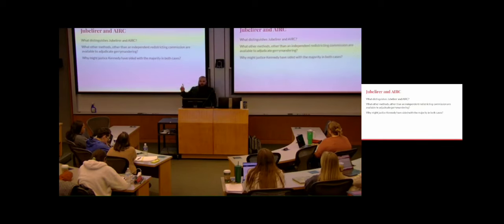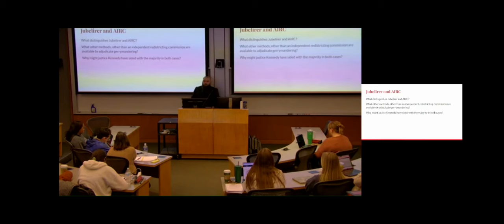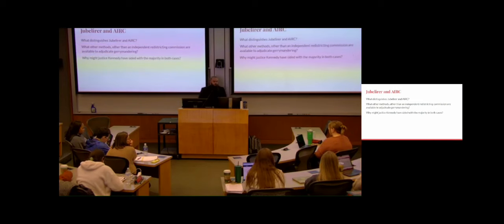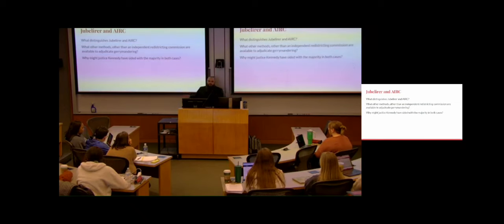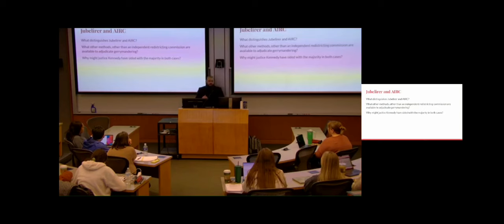What distinguishes Vieth and the Arizona Independent Redistricting case? In Vieth, we're dealing with whether it's a justiciable or political question. The second case is whether it's permissible under the Constitution — a delegation theory question. They're not saying we can't adjudicate the second one. They're saying we can decide whether these provisions are constitutional, but they won't decide what a gerrymander is. That's a pretty important distinction, because the Supreme Court still to this day will not decide what a gerrymander is. The point of these two cases is that we're going to see state courts take over that role instead of the federal courts.